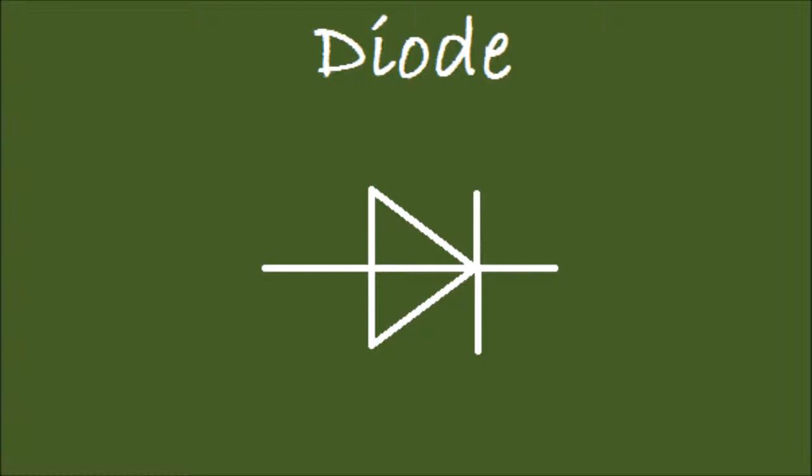The diode is part of the semiconductor family because it's made out of silicon or germanium, for example. These are the two most common materials for this kind of components. These materials don't conduct as good as copper, but also don't lock the current like plastic or cable insulation. It's something between these kinds of materials, so we call it a semiconductor.